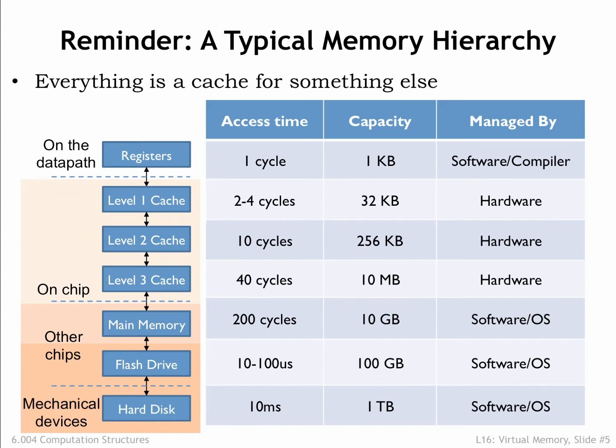Flash drives and hard disks provide storage options that have more capacity than main memory, with the added benefit of being non-volatile — in other words, they continue to store data even when turned off. The generic name for these new devices is secondary storage, where data will reside until it's moved to primary storage, i.e., main memory, for use. So when we first turn on a computer system, all of its data will be found in secondary storage, which we'll think of as the final level of our memory hierarchy.